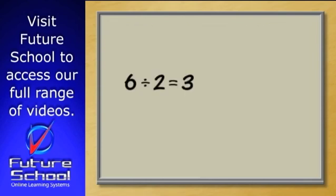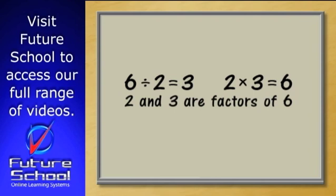For example, the number six can be divided by two exactly three times, or in other words, two times three equals six, so the numbers two and three are factors of six.